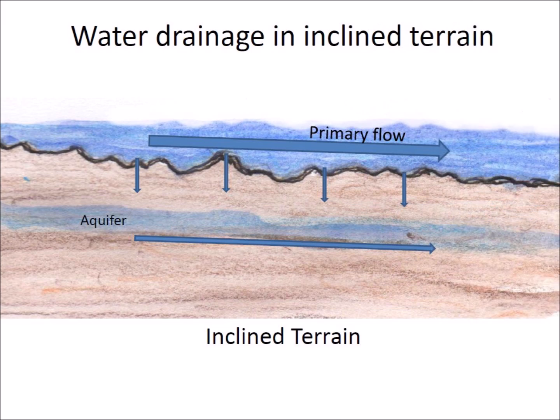On inclined terrain, rainwater flows downhill, but some water also passes through the soil to underground aquifers. The flow of water along the surface is turbulent and erodes the sandy soil, eventually erasing the features of the Carolina Bays and Nebraska Rainwater Basins.